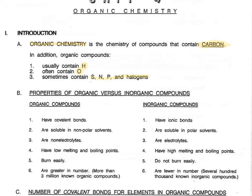We'll start with a comparison of organic and inorganic compounds. For the organic compounds, we know that they have covalent bonds, whereas most inorganic compounds have ionic bonds. Since organic compounds have covalent bonds, they are molecular compounds. Most of them are nonpolar and are soluble in nonpolar solvents. On the other hand, inorganic compounds are ionic and tend to be soluble in polar solvents, like water, if they're soluble at all.